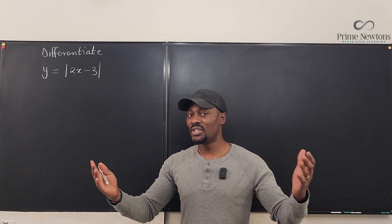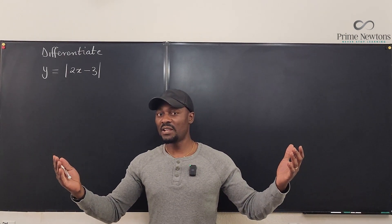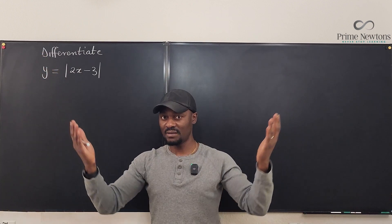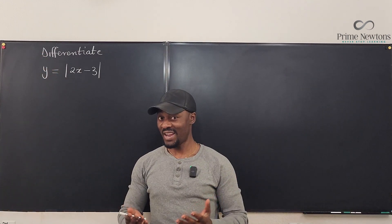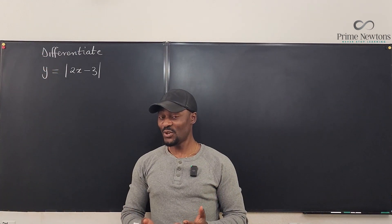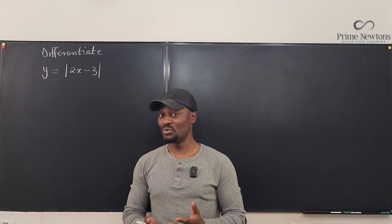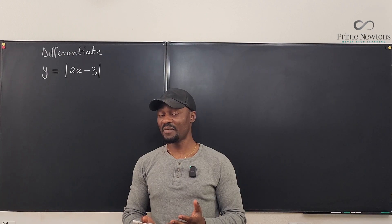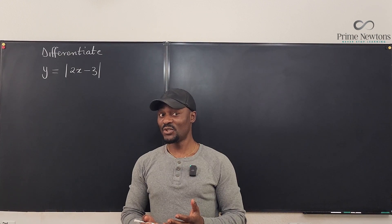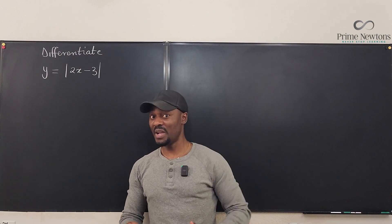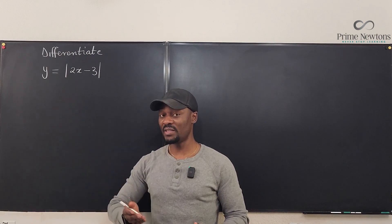Imagine the absolute value function — it is always a V shape. You can see there's no way to take the derivative and get one answer. There's always one slope going this way and another going the other way.